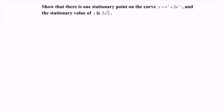Show that there is one stationary point on the curve y equals e^x plus 2 multiplied with e^(−x), and the stationary value of y is 2√2.